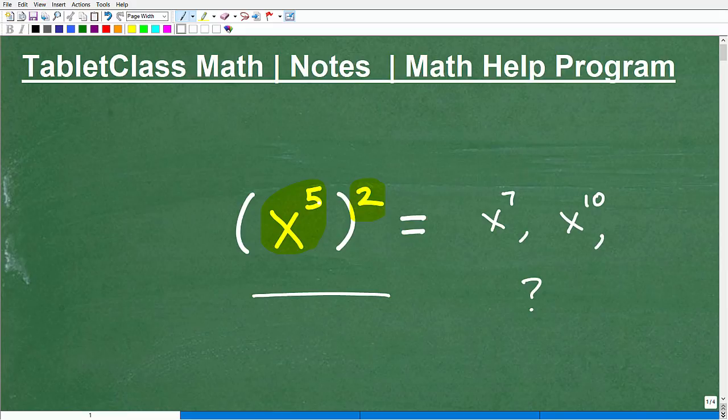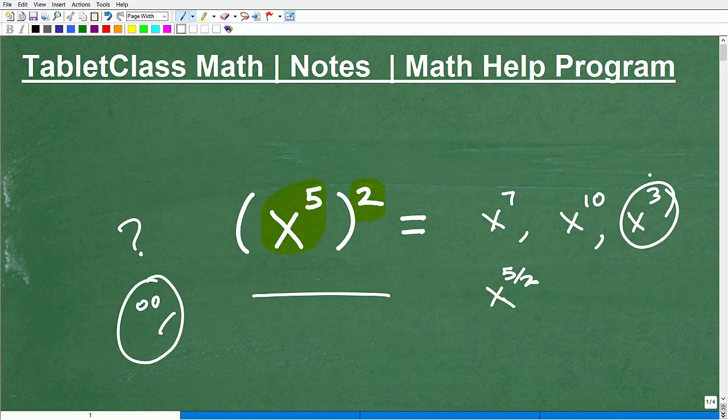You can go 5 or 2 minus 5, so that could be x to the third. And you could even take this 5 divided by 2. So we have all kinds of different options if we're looking to guess. If this was a multiple choice question with A, B, C, and D, a lot of you would be like, which one? I'll choose this one.